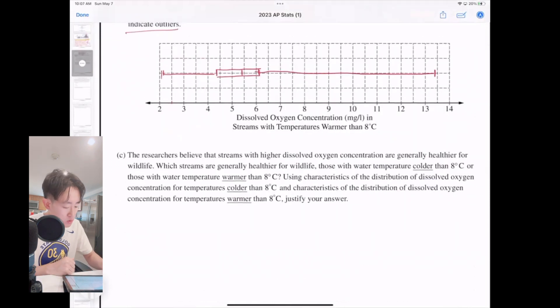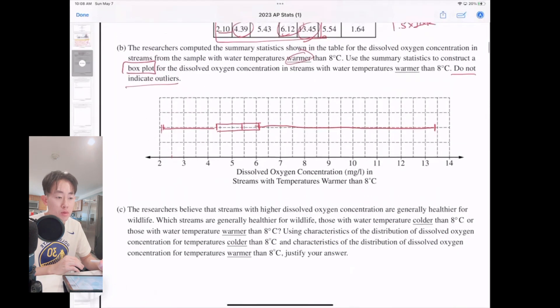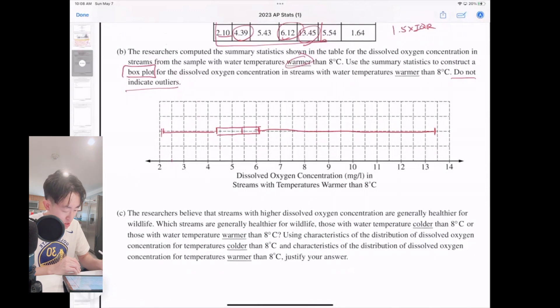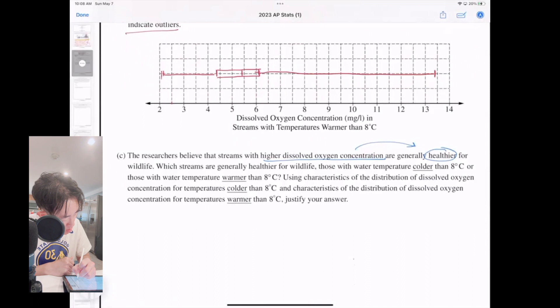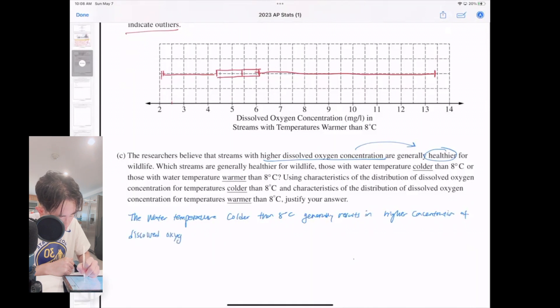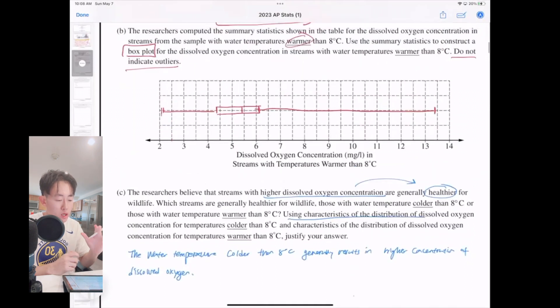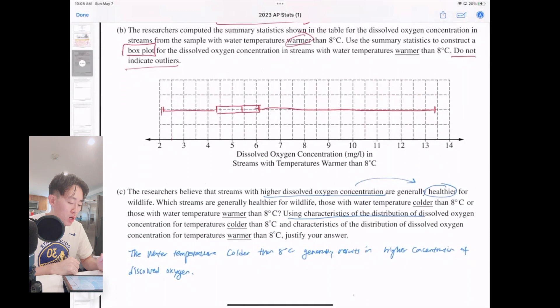Part C. The researchers believe that the streams with higher dissolved oxygen concentration are generally healthier. Which one is going to be healthier for wildlife? So you are trying to decide between part A and part B, the distribution—which one has a higher oxygen concentration, because higher oxygen concentration is going to lead to healthier wildlife. So which one would it be, warmer or colder? The obvious answer here would be the water temperature colder than 8 degrees Celsius generally results in higher concentration of dissolved oxygen. Why is that? Well, it literally says to use the characteristics of the distribution.